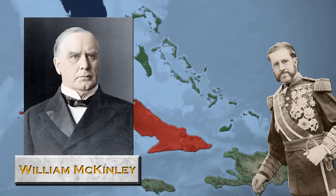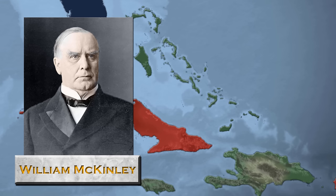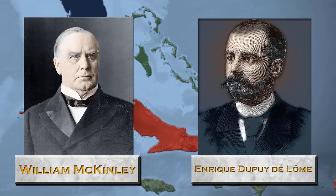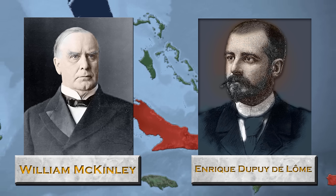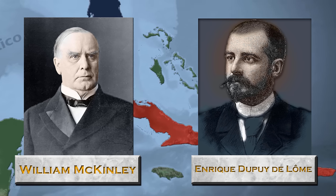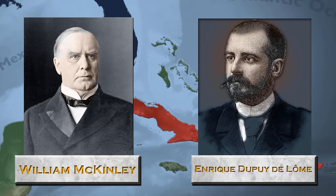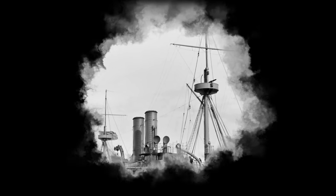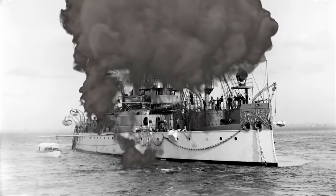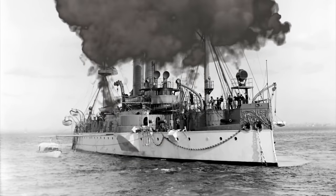As William McKinley replaced Grover Cleveland in 1897, the US became more and more keen to intervene. When a letter from Spanish Foreign Minister Enrique Dupuy de Lomé criticizing President McKinley was published by the New York Journal on February 9, 1898, things began to rapidly escalate, and with the sinking of the USS Maine occurring less than a week later, there was a swift move towards war from that point on.